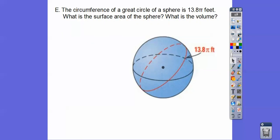So the circumference of a great circle of a sphere is 13.8π feet. What's the surface area of the sphere, and what is the volume? Remember, circumference is 2πr. So that 13.8π is 2πr, so let's divide both sides by 2π, and we get the radius. The π's cancel, 6.9.